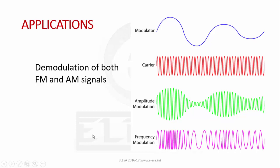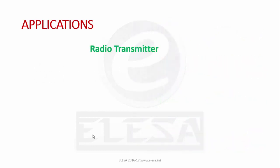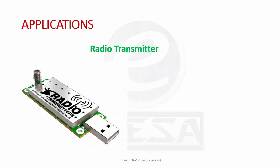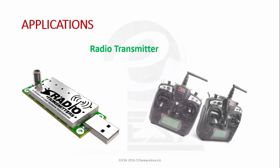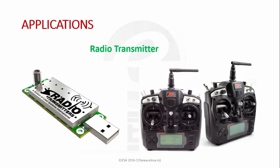Another application is in radio transmitters. A PLL is used to synthesize new frequencies which are a multiple of a reference frequency with the same stability as the reference frequency. A radio transmitter is an electronic device which when connected to an antenna produces an electromagnetic signal such as in radio and television.